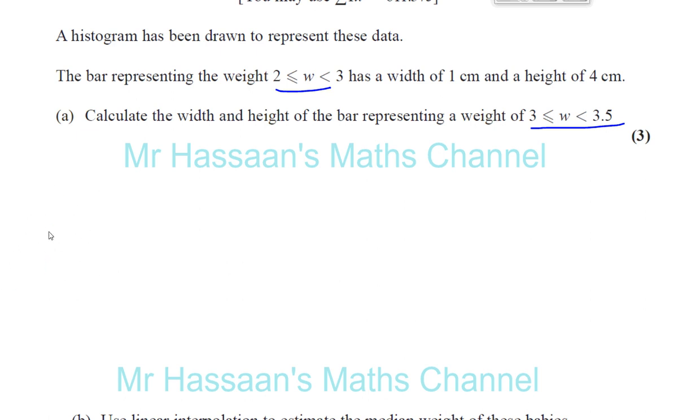Let's deal with what we know already. So what we have to find is the 3 to 3.5 bar. And what we know about is the 2 to 3 bar. So we're dealing with the width of the bar and the height of the bar.